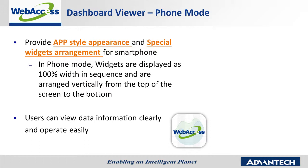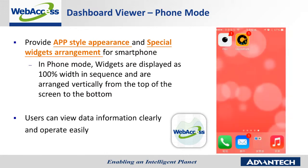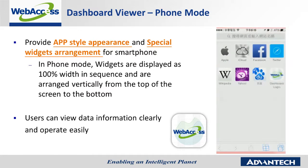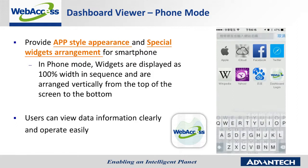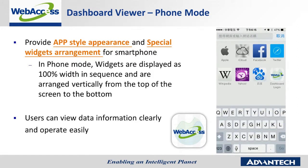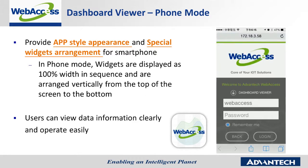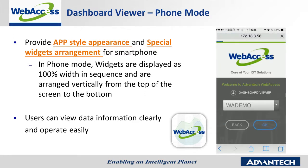To view the Web Access Dashboard on their smartphone, what users have to do is simply type the IP address of the server in any browser. Then they can connect to the project server and view the dashboard page. After logging into the account, choose the project, and the dashboard page will display on the smartphone.